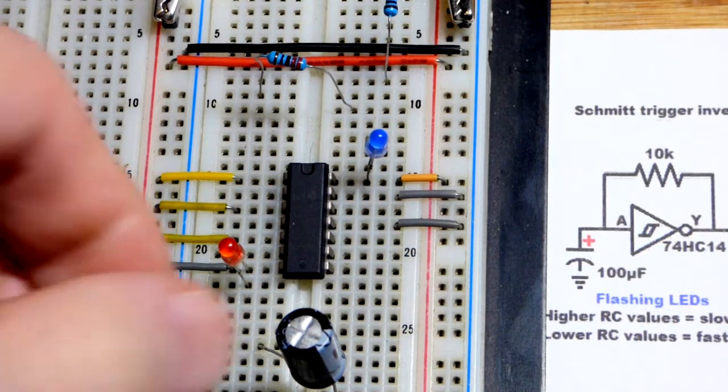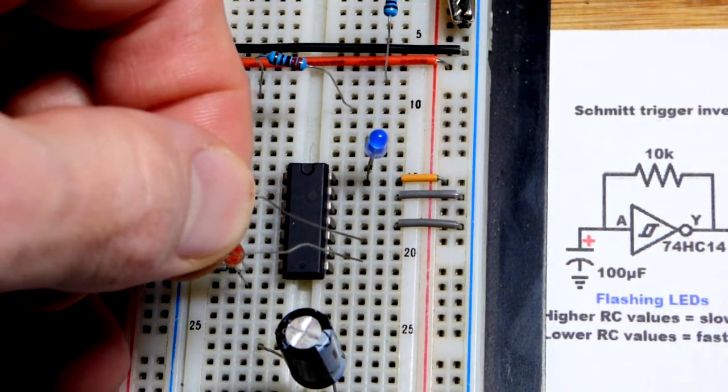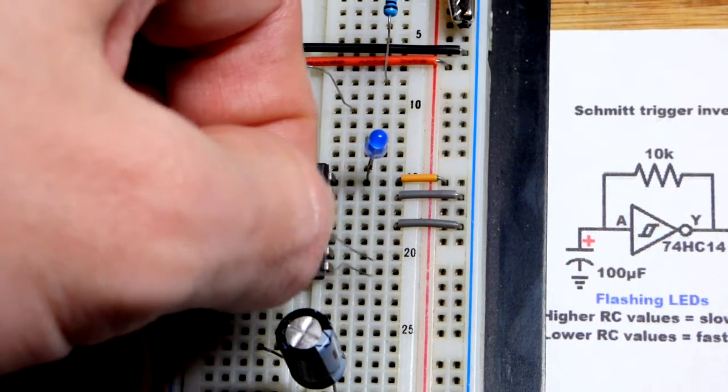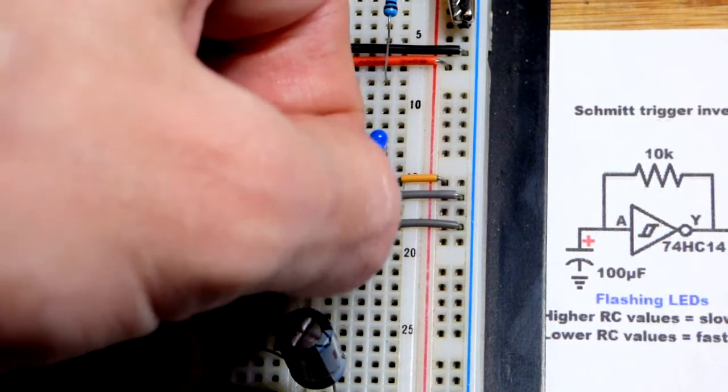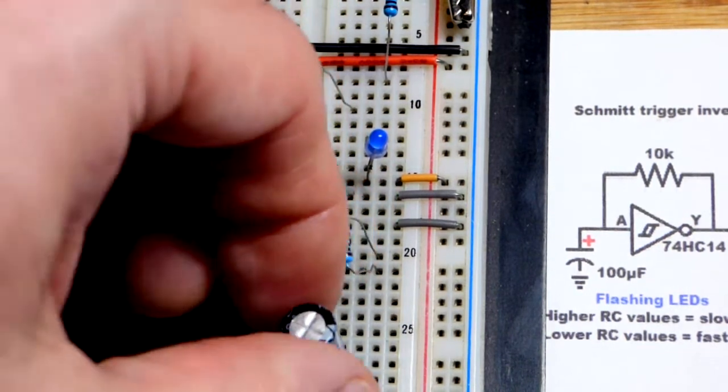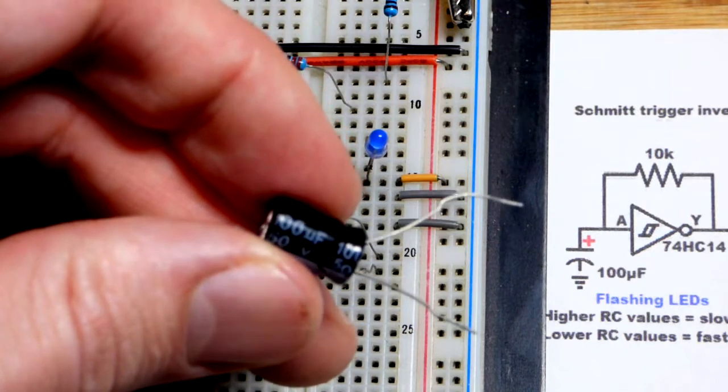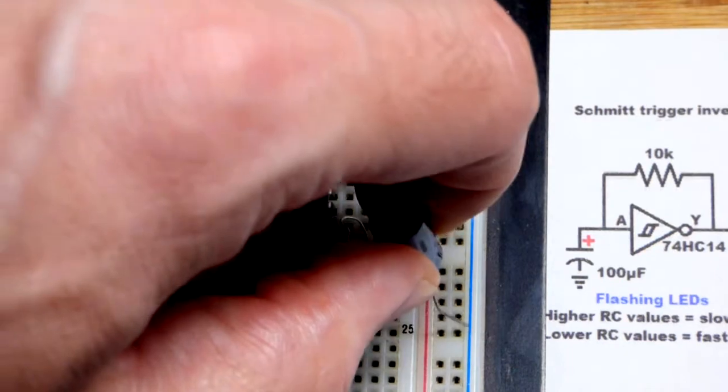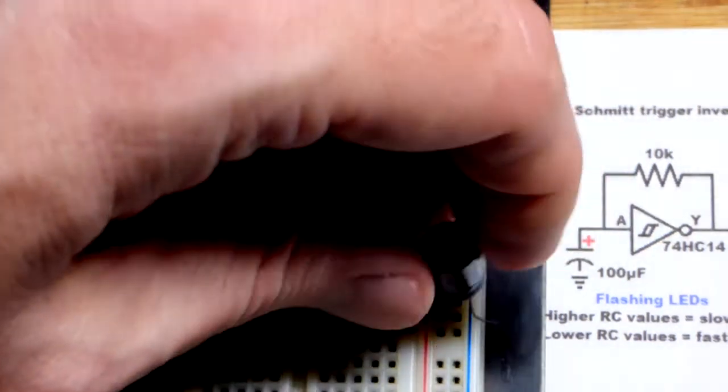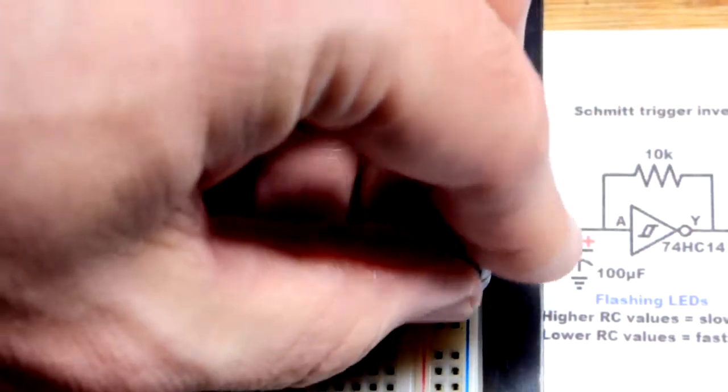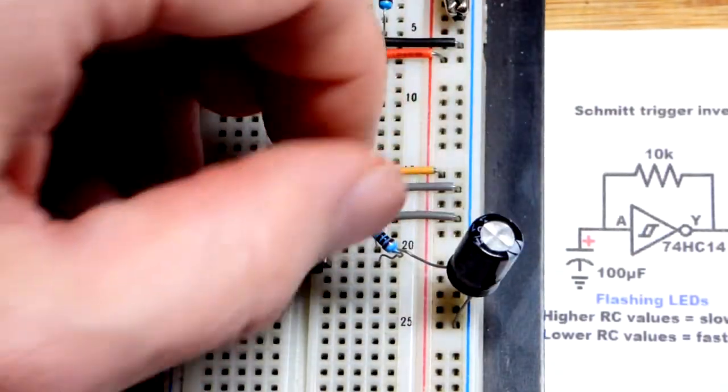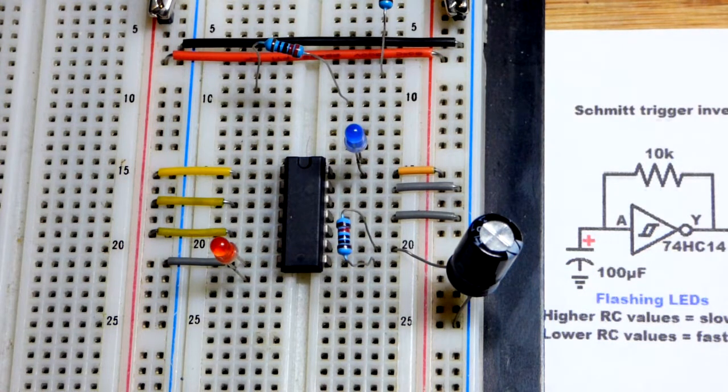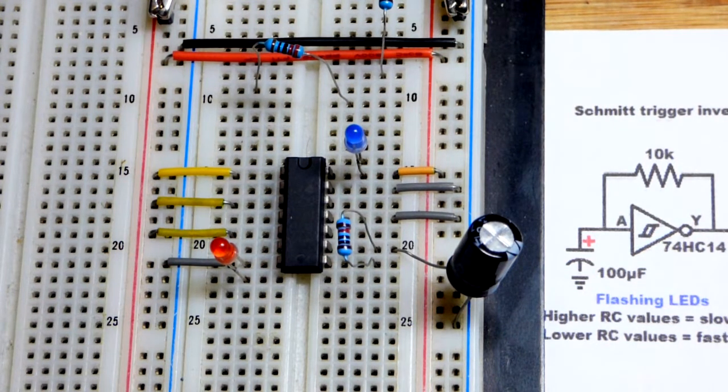So for our timing, we're going to take a 10 kilo ohm resistor and go from the output down there to the input. We're going to shuffle this over a couple of spots. And then we're going to take our 100 microfarad capacitor. So if you use higher values for one or both of these, then you're going to get a slower timing, because it's going to take longer for the capacitor to charge to a given voltage and to discharge. If you use lower values, it'll go faster because the capacitor will charge and discharge faster.